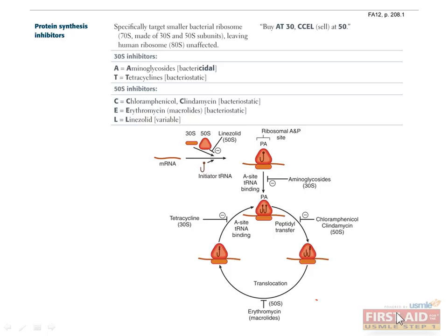Bacterial ribosomes are targets for antibiotics. These antibiotics are selected for the smaller bacterial ribosome and don't affect the human ribosome or its ability to synthesize proteins. Recall that the bacterial ribosome is 70S, comprised of 30S and 50S subunits, each of which is a target for antibiotics.